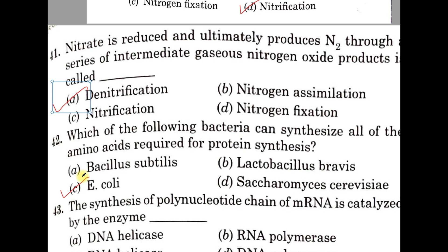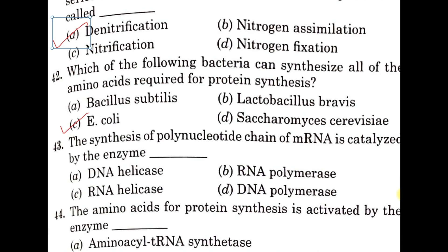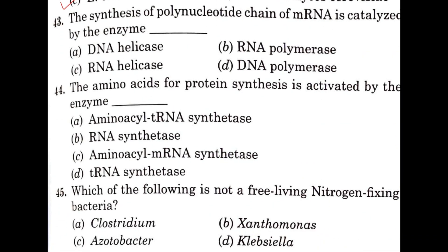Question 43. The synthesis of polynucleotide chains of messenger RNA is catalyzed by the enzyme A: DNA helicase, B: RNA polymerase, C: RNA helicase, D: DNA polymerase. This is a very simple, direct question and the correct answer is option B, RNA polymerase.